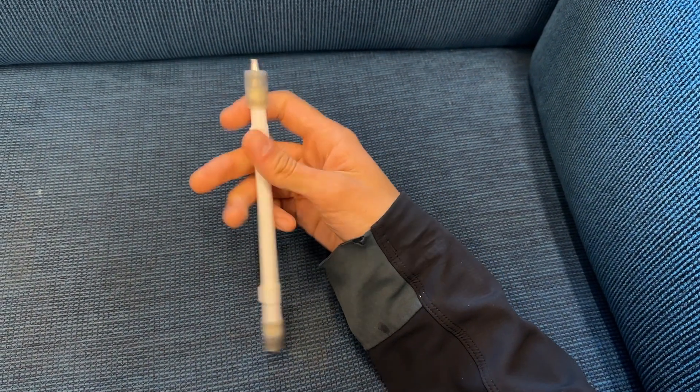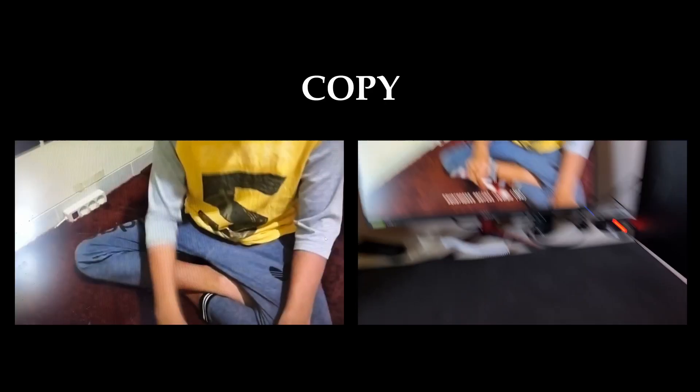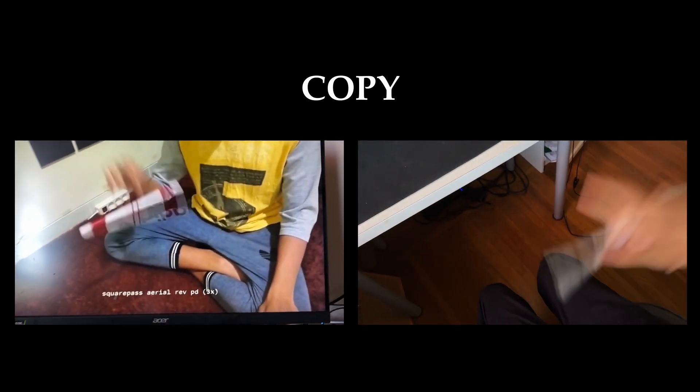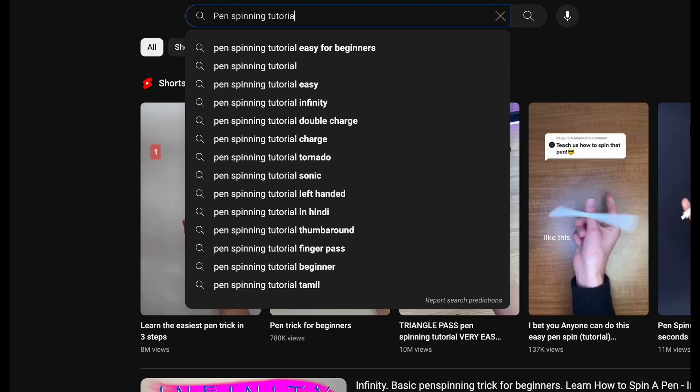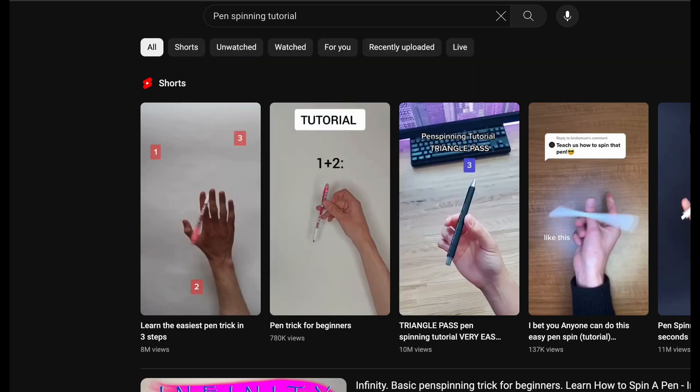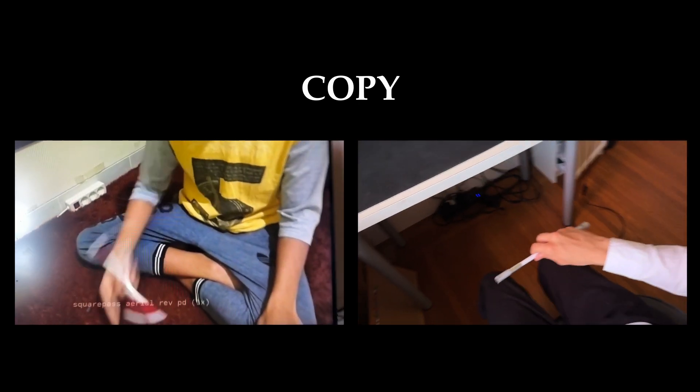The secret to being good at pen spinning at a later level is being able to copy any trick you see. And the earlier you start with your copying, the better. I understand this is a tutorial, but relying heavily on verbal aid and instructions will limit you in the future more than you know it. So try your best to copy what I do.